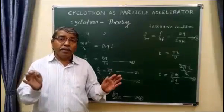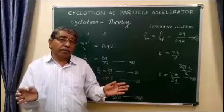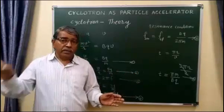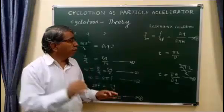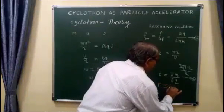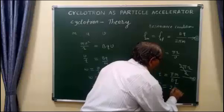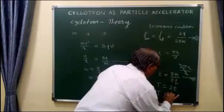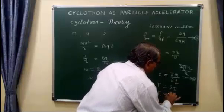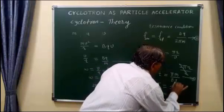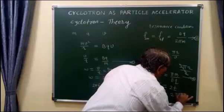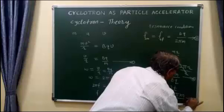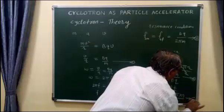Now, what will be the time period — that is, the time taken by the positive ion to complete one whole cycle or one revolution? That is given by T = 2t. So this time period of revolution of the positive ion equals 2t = 2πM / (BQ). This is equation number 7, the expression for the time period of revolution of the positive ion inside the cyclotron.